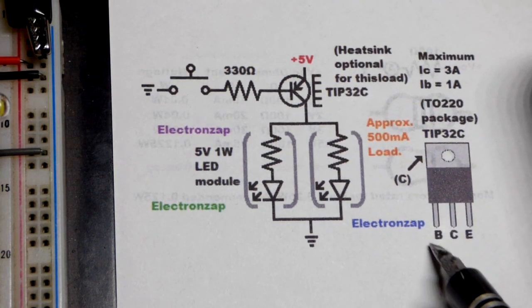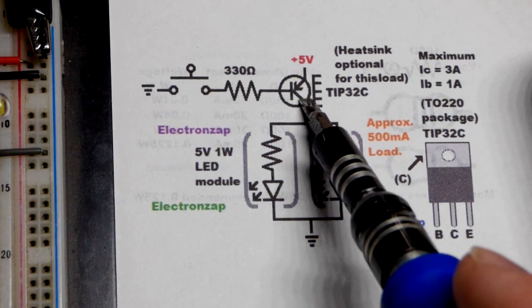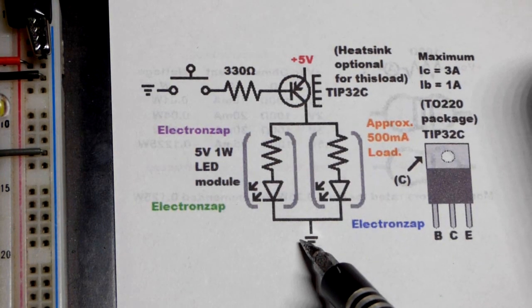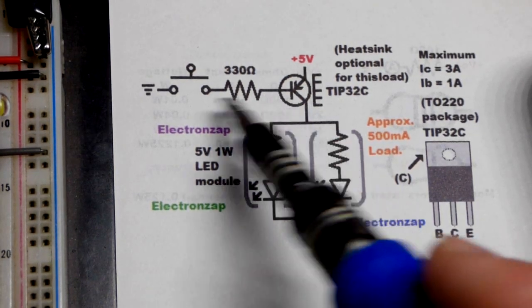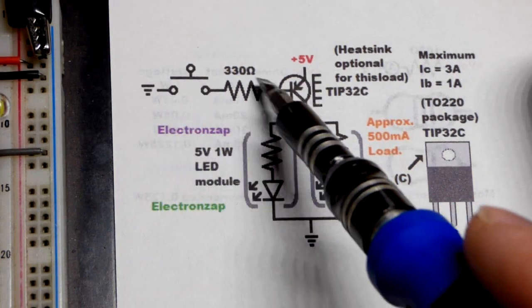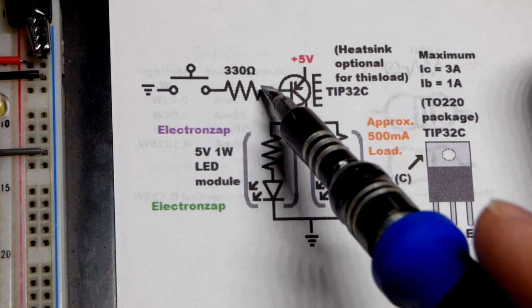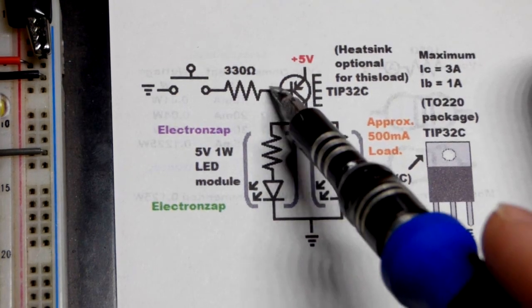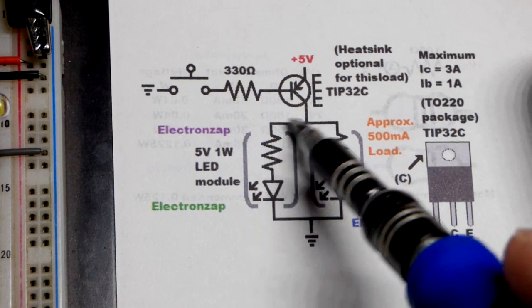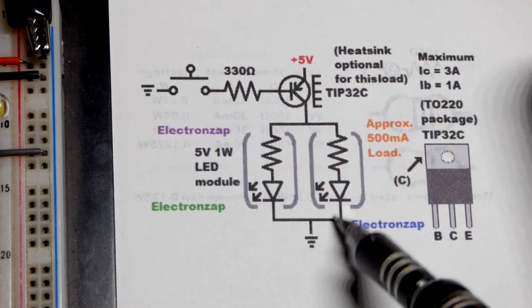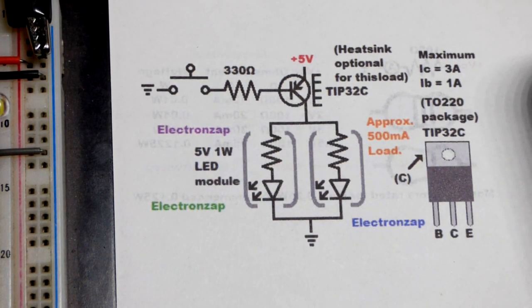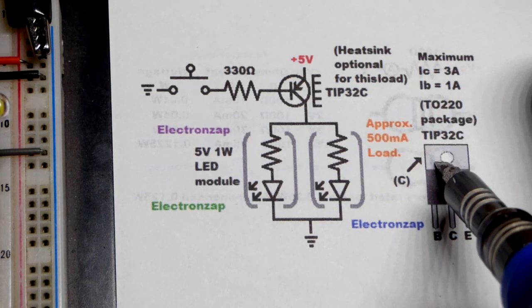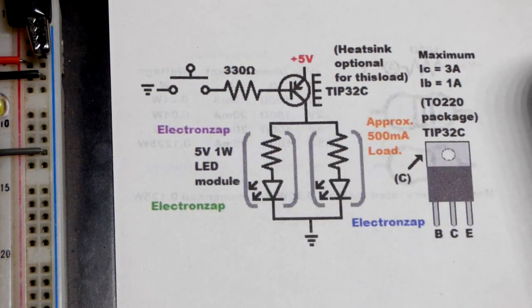So one problem I had in the earlier video was the collector touched, that was the NPN though, so polarities are opposite, but it touched the base. And there you can see when you close the switch there, you got ground. You got ground over here. So the base and the collector, if they touch each other, they have the same voltage. That voltage can get through the load right there and turn the transistor on, even though you're not giving that signal to the base. So that was a problem I had in the earlier video. So I didn't add the heat sink there to avoid that again.